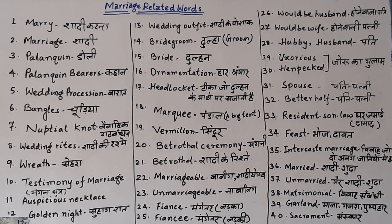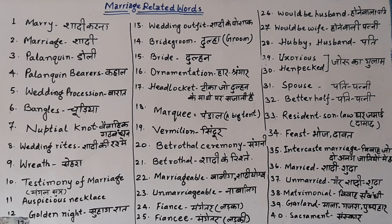The thirty-eighth word is 'matrimonial,' meaning related to marriage — 'vivah se sambandhit.' We use it in day-to-day conversation, for example 'matrimonial problem' means a marriage-related problem. The thirty-ninth word is 'garland,' meaning 'mala,' 'gajra,' or 'pushphar' — the garland that the groom often wears.